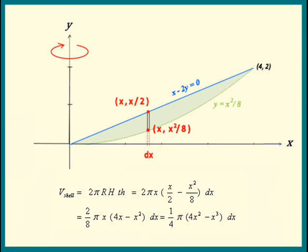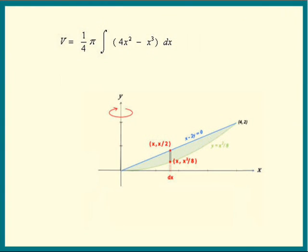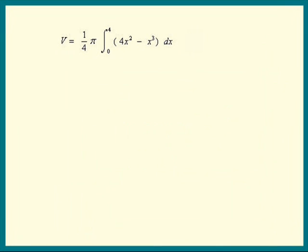So the volume of the solid is the sum of all these shells and where do we start slicing? We start slicing when x is 0 and we stop slicing when x is 4. So those are the limits of integration. Ready to integrate? We get 1 fourth π times 4 times integrate x squared. We get x cubed over 3 minus integrate x cubed. We get x to the fourth over 4.